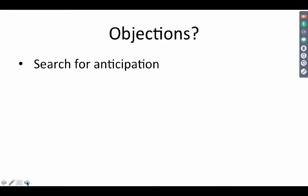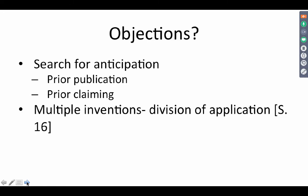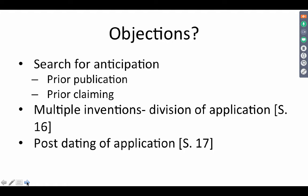Under section 13, issues with regard to anticipation can be raised, as well as issues regarding prior publication or prior claiming. There could be issues with regard to multiple inventions, in which case the controller can ask for a divisional application to be filed. There could be issues regarding post-dating of an application where a request has been filed, procedural requirements, and also substantive objections.